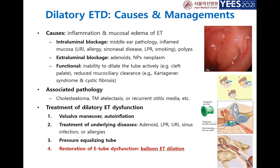As you already know, dilatory e-tube dysfunction has many causes and management options are limited. There are lots of causes: intraluminal blockage by medial pathology, URI, allergy, and sinonasal disease can cause inflamed mucosa, and subsequently medial pathology will occur because the eustachian tube does not function well. Adenoid and nasopharyngeal neoplasms can block the e-tube, and functionally there might be a problem, especially in cleft palate, Kartagener syndrome, or cystic fibrosis. There may also be associated medial pathologies like cholesteatoma, tympanic membrane atelectasis, and recurrent otitis media.